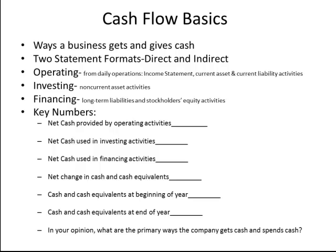The key numbers that we're going to find have to do with what's the net cash — cash in versus cash out, or source and use of cash — from operating activities, investing activities, and financing activities. Then netting all those together, we get the net change. We take that and put it together with the cash balance at the beginning of the year to give us the cash balance at the end of the year.